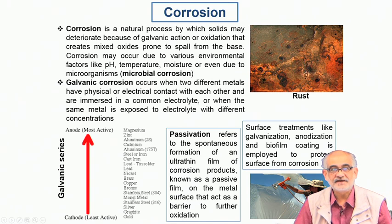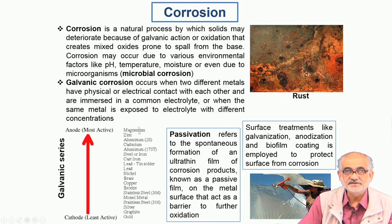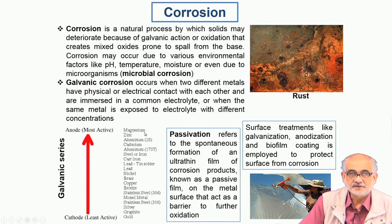Whenever we have metals of dissimilar nature, we can look at the galvanic series, which is created in terms of the galvanic or electrochemical potential of these metals. The metals arranged high in this series are much more reactive and are called anodic, whereas the ones at the bottom of the series are cathodic.